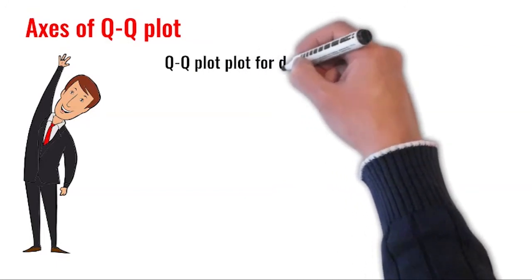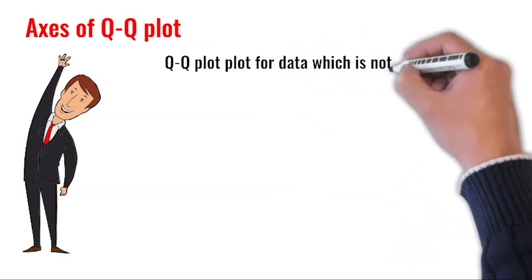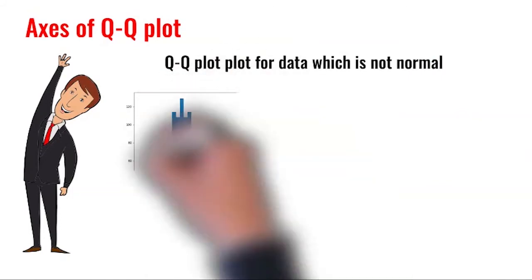For example, if the data is skewed on the high side, we will obtain a QQ plot deviated from the straight line.